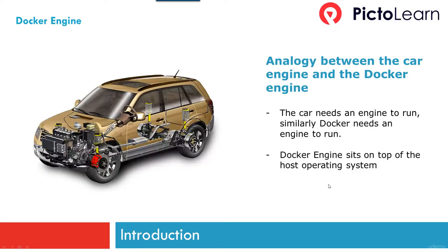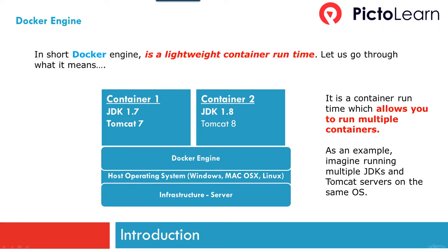In order to explain the concept of a Docker engine, I'm going to give you an analogy between a car engine and the Docker engine. Just like a car needs an engine to run, Docker also needs an engine to run. Docker engine sits on top of the host operating system and is a lightweight container runtime. The Docker engine allows you to run multiple containers — in this case, multiple versions of JDK and Tomcat on the same machine.